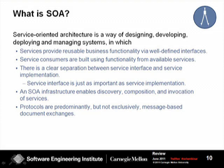If we look at it from an architectural pattern and style perspective, we can think about it in terms of components and connectors. As far as components, we have services that provide reusable functionality, and these services have very well-defined interfaces. We can think about services that use functionality from these available services and compose them into full applications. One characteristic about services is the separation between service interface and service implementation, which is really what promotes platform independence. A third component is the SOA infrastructure, which sits in between the services and the consumers and enables the discovery, composition, and invocation of services.